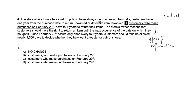If you cut out the information 'who make purchases on February 29th,' it would read 'customers have four years to return their items' — meaning every customer has four years, which is wrong. Specific information must be essential, and essential information cannot come between two commas or dashes. So option A is wrong; option B has a comma, so it's wrong; option C has a comma, so it's also wrong. We are left with option D — 'customers who make purchases on February 29th have four years to return their items' — with no commas. That is definitely our answer.